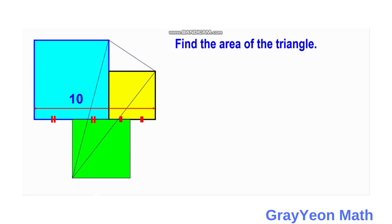We attack this problem by first labeling the sides of the figure. We label the side of the blue square as 2a. Since the sum of the distances of the 2 squares totals 10, this length should be 10 minus 2a. This distance, which is half of the blue square, is a. So this other distance is 2a minus (10 minus 2a), which equals 4a minus 10.